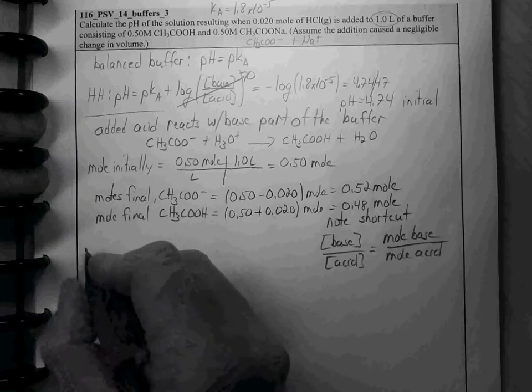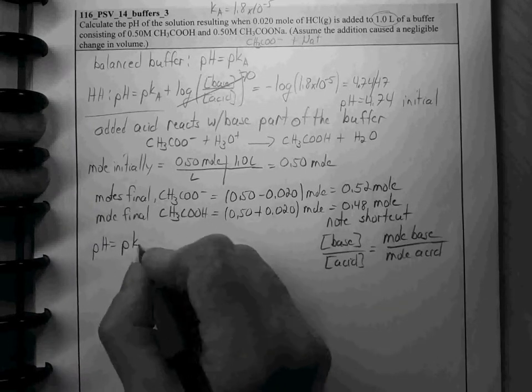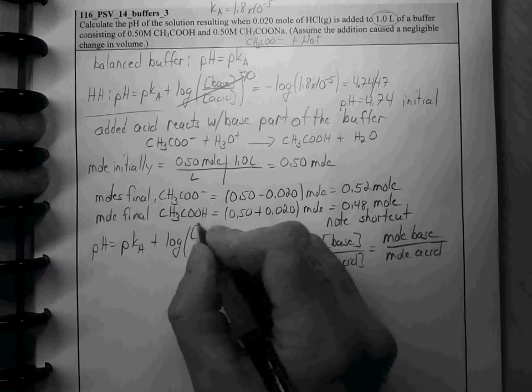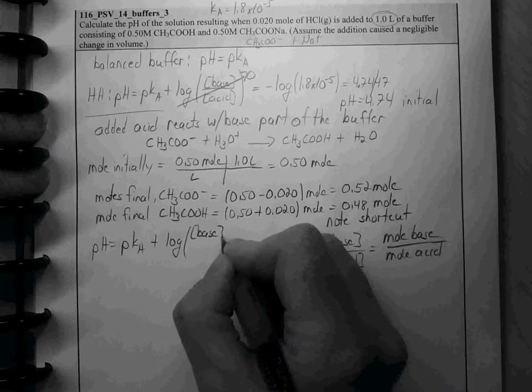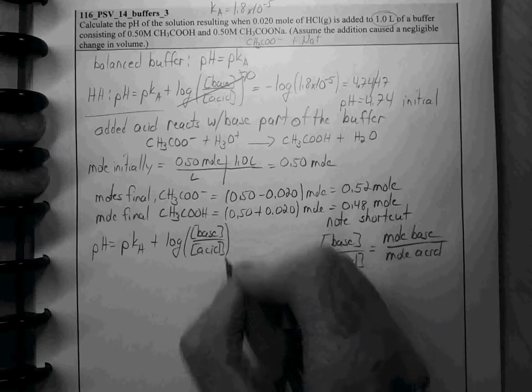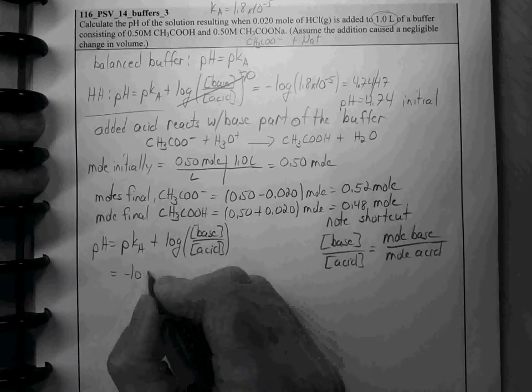Alright, so now apply Henderson-Hasselbalch where pH is equal to pKa plus log of the ratio of the base to the acid.